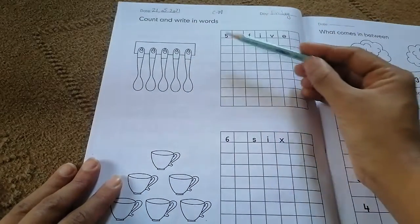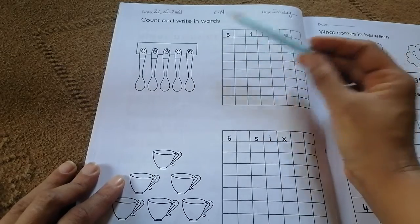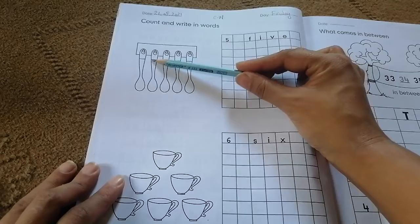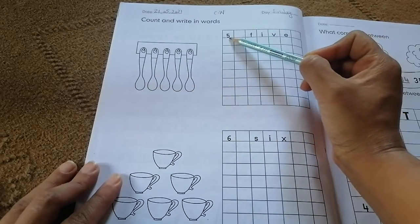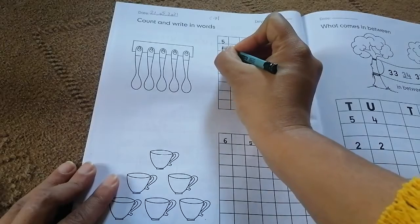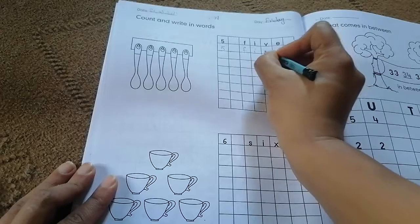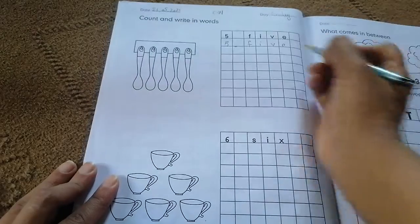What we are going to write today: count and write in words. I had to write these numbers in words. One, two, three, four, five. These are five. Which number is this? Five. First you just write down number five and then write this number in words: F-I-V-E, five.